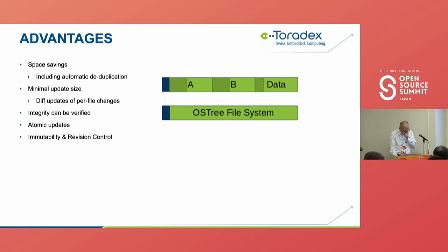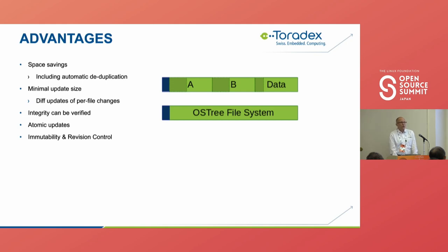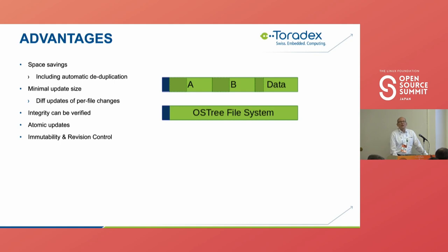Some advantages of OSTree: first is space saving. Automatic deduplication based on checksums makes it very space-efficient, both in terms of disk space and the bandwidth needed to download any new update. OSTree is very capable of figuring out exactly which objects you need and transferring only files that have changed. With dual-AB, you might do a binary delta to transfer less data, but you still have to write the entire partition. OSTree saves significant time in both download and flash updating. Another very important thing is that integrity can be verified — checksums and cryptographic validation of all objects are integrated into the system.